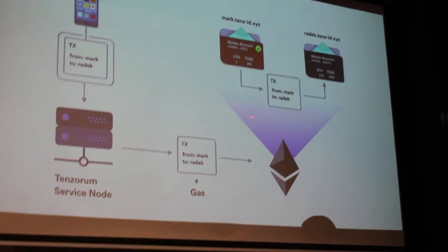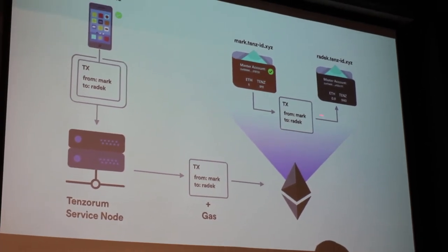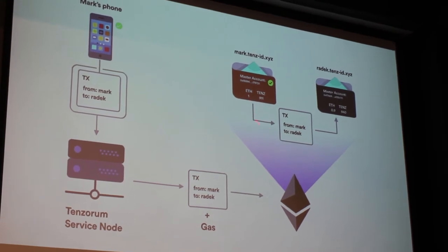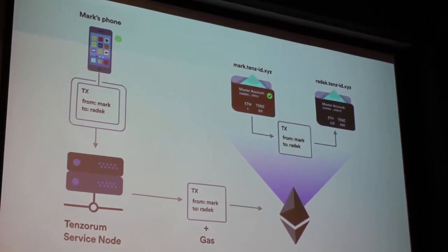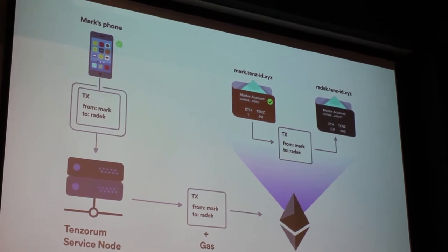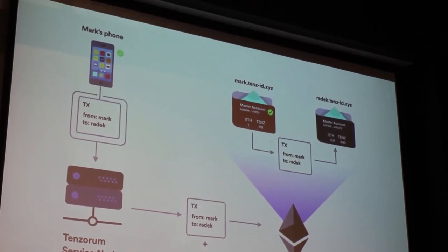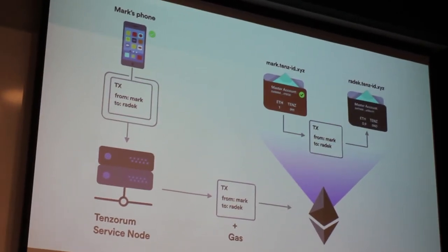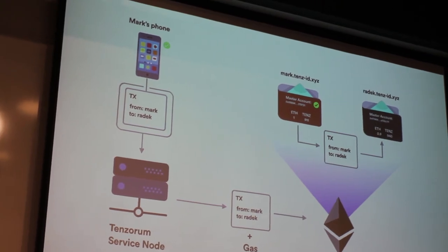Then the transaction will be picked up by a node on the Ethereum network and the transaction will be complete. I'll send money from my wallet to Radek's wallet — we didn't pay any gas. We just said we want to send money from my account to Radek's wallet. Then a service node, which is a decentralized layer on top of the Ethereum blockchain, facilitated this transaction for us.